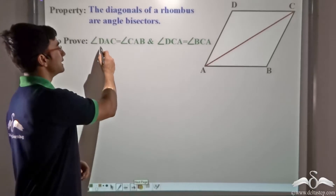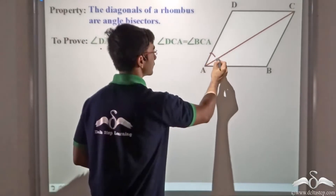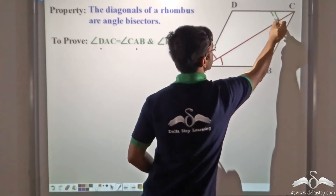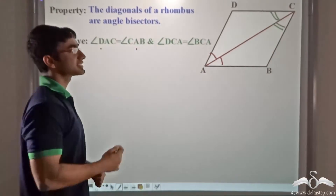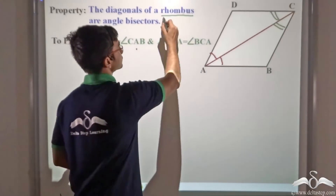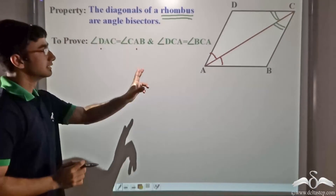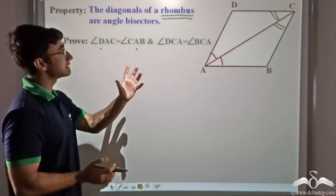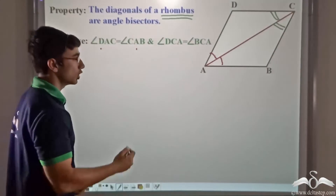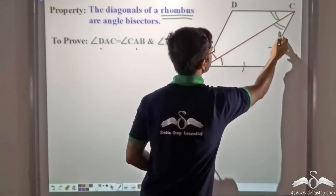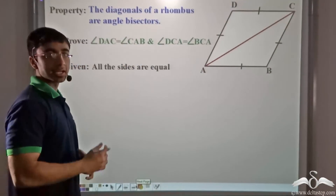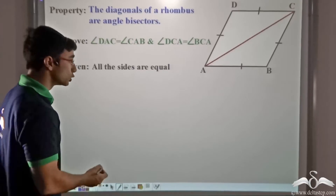We have to prove that angle DAC equals angle CAB, and angle DCA equals angle BCA. We have been given that this is a rhombus, which means adjacent sides are equal. Since a rhombus is a special kind of parallelogram, all sides are equal: AB equals BC equals CD equals DA. To proceed with the proof, we consider two triangles — triangle ADC and triangle ABC.